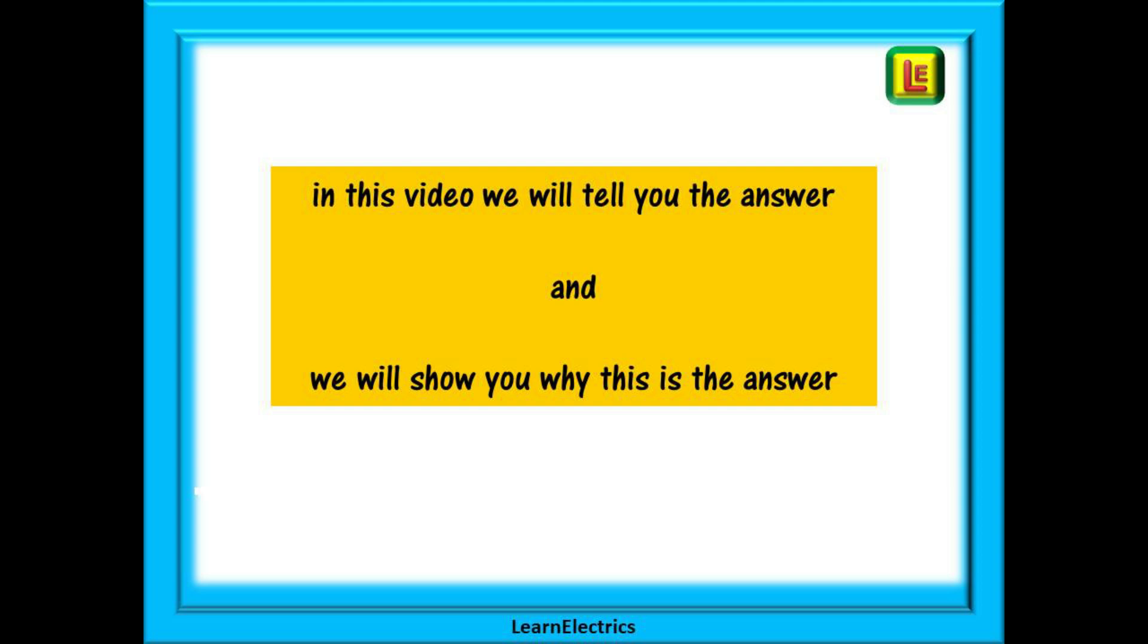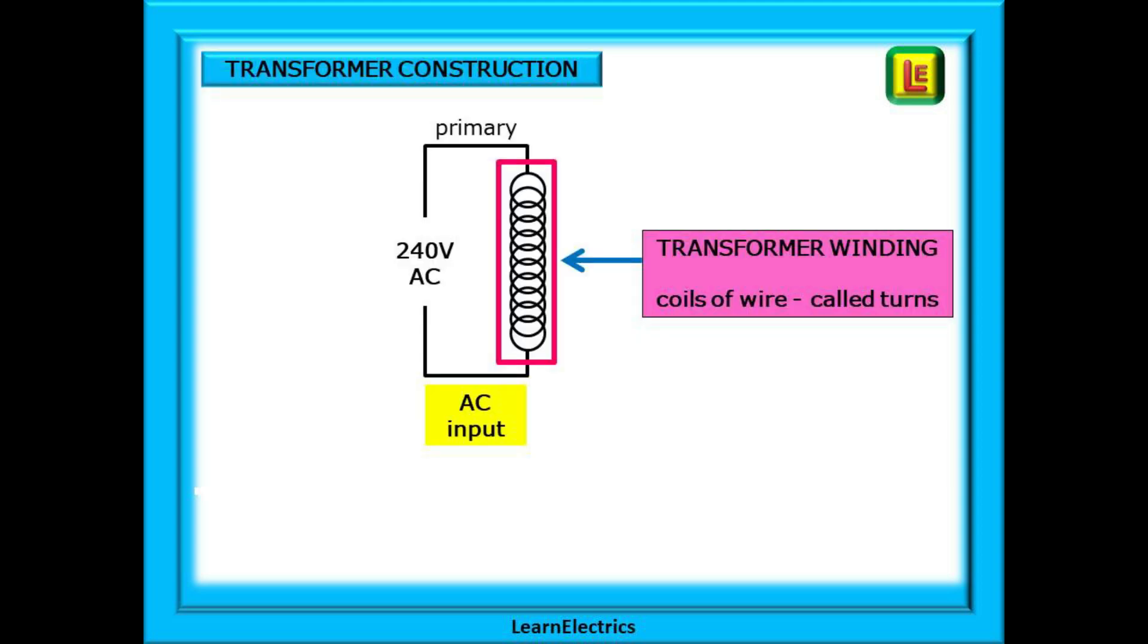The transformer will have a primary winding, the input side. In this example, we will say that the input voltage is 240 volts, as this makes the first calculation easier to follow. It is basically just a coil of hundreds or even thousands of turns of fine wire. The actual number of turns in the winding is determined by the manufacturer, and the input must be alternating AC current.